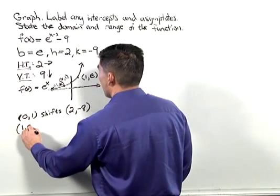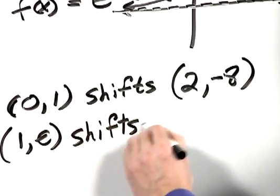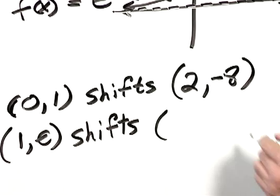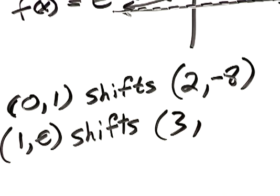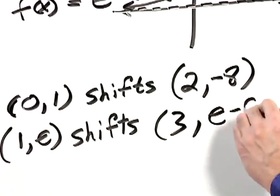The next point, 1 comma e. When it shifts, if we move it 2 units to the right, the x-coordinate is 3. The y-coordinate is going to be e minus 9.